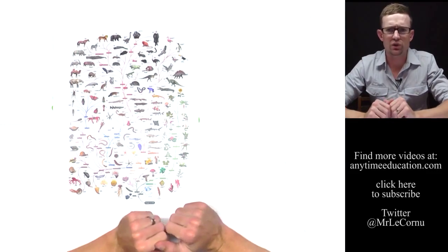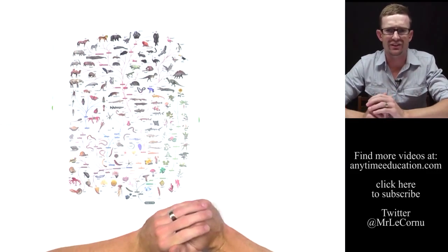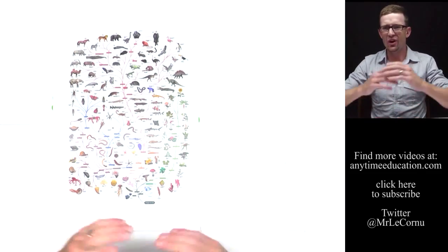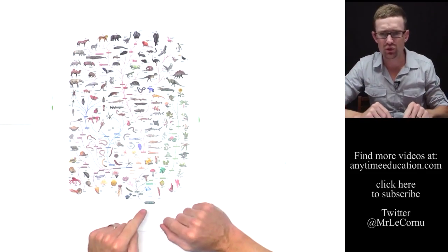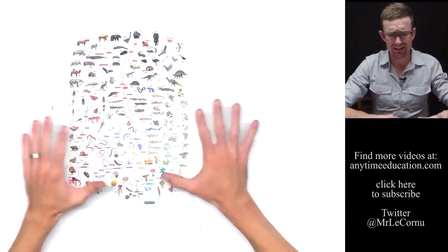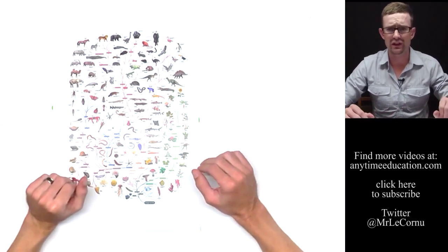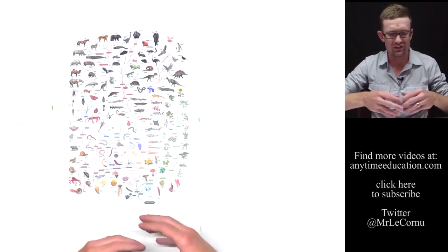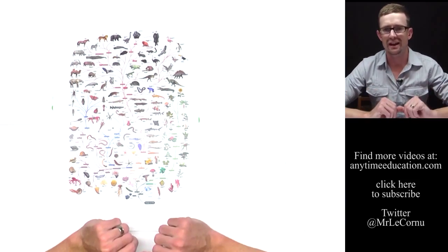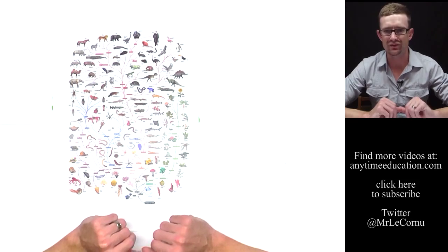In a previous video I talked about the DNA evidence for evolution and that there's overwhelming evidence that life originated from a single source. I understand this diagram is way too small for you to see, but it's just a cool visual representation of some of the evolution that has taken place over billions of years.